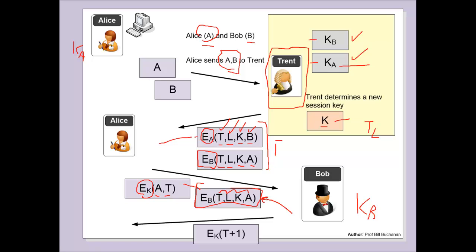Bob will be able to decrypt this part with his key. He then determines the timestamp, the lifetime, and is able to get the session key and also Alice's identity. With this key, he is then able to decrypt the other part. He takes off the identity of Alice and checks that it was the same as the one in the ticket. He then looks at the timestamp and in reply back to Alice, he will take the timestamp plus one and encrypt it with the new key that has been created between Bob and Alice.